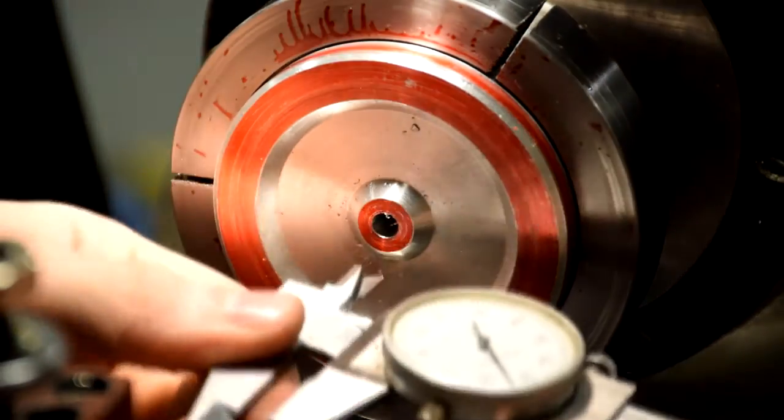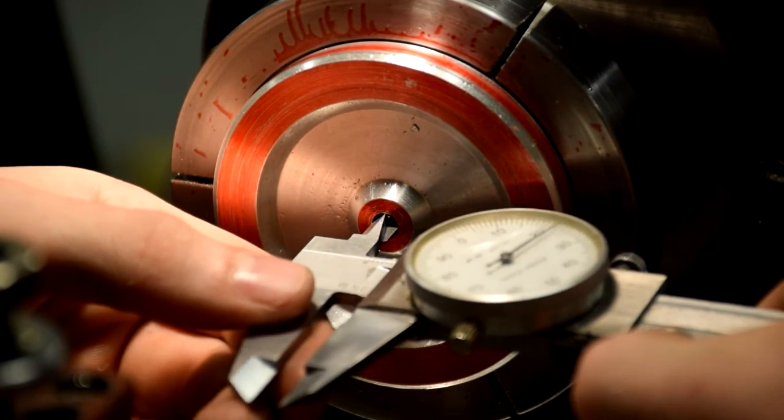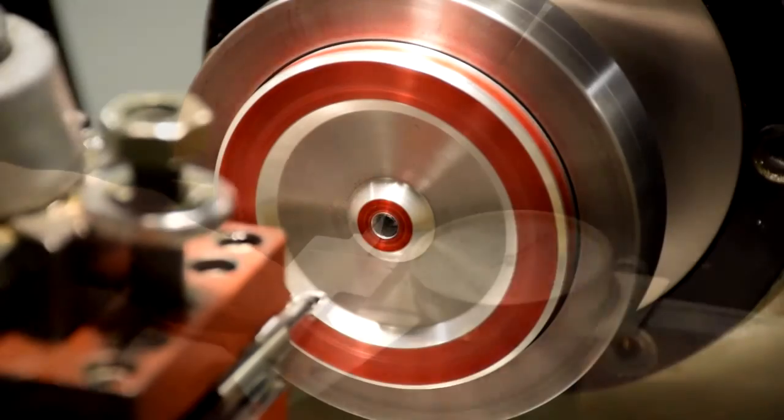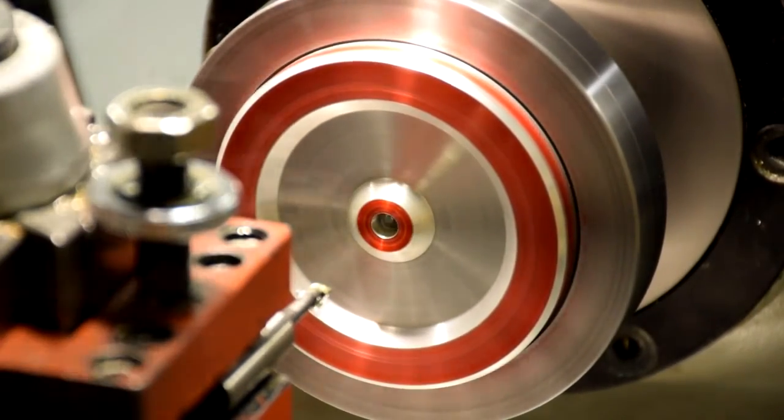Measure the diameter of the hole. Subtract the diameter of the spindle from the diameter of the hole and the result is the amount of material that needs to be cut out of the hole. Cut the material out of the hole.